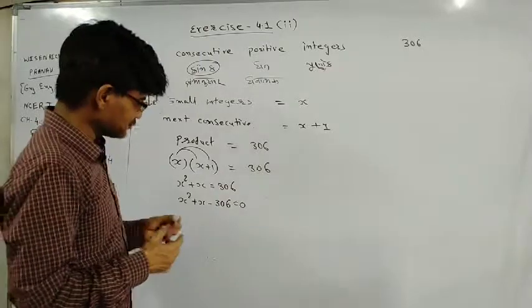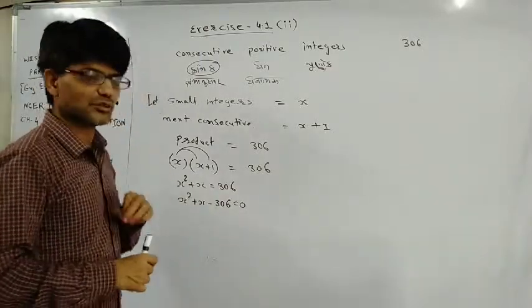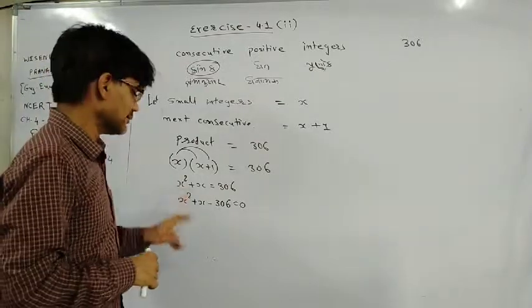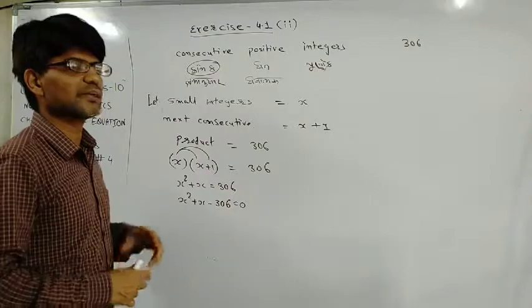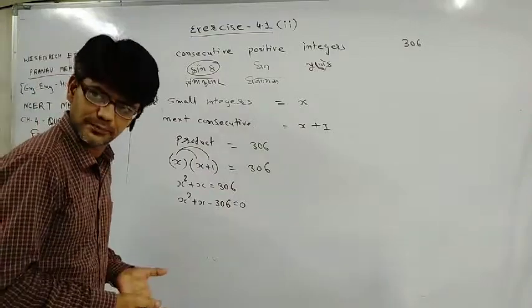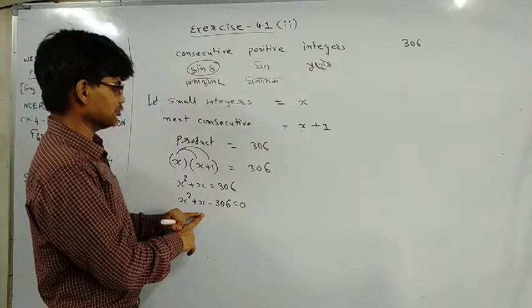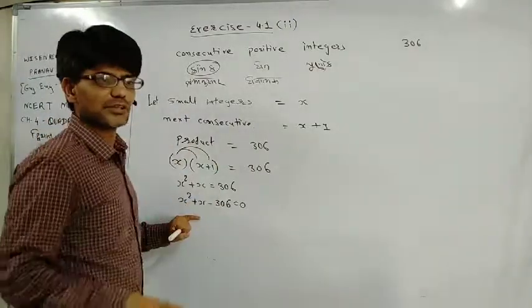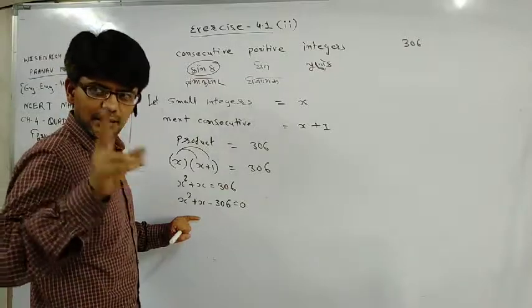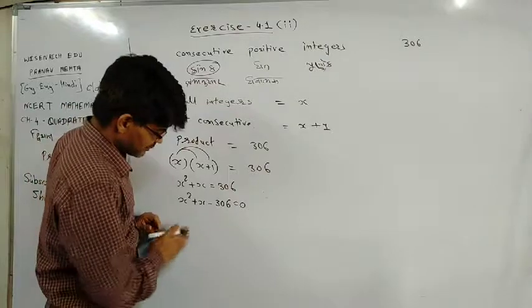Normally what happens is we will find the solution. The solution will have two values. We know that we will solve this. x will have two values. Sometimes both values are correct. So if I get the value of x here, I know that when you solve this, you will get x equals 17 and 18 as your solution.